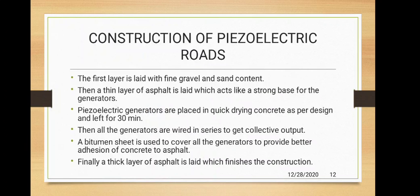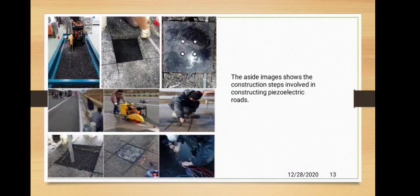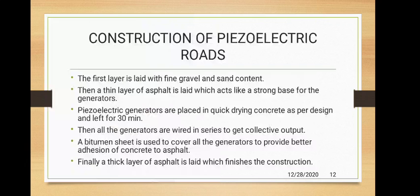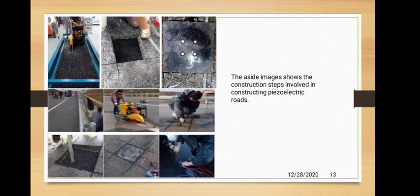All the generators are wired in series to get the collective output. The generators are then covered with a thin layer of bitumen. A bitumen sheet is used to cover all the generators to provide better adhesion of concrete to asphalt. Finally, a thick layer of asphalt is laid which finishes the construction, providing sufficient friction to vehicles and preventing damage to generators from the large pressure of vehicles.